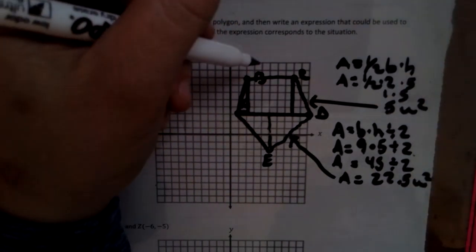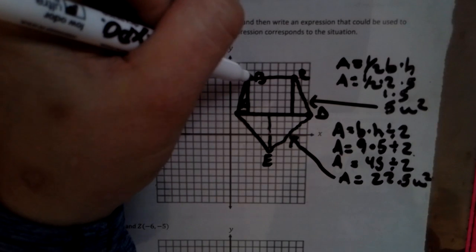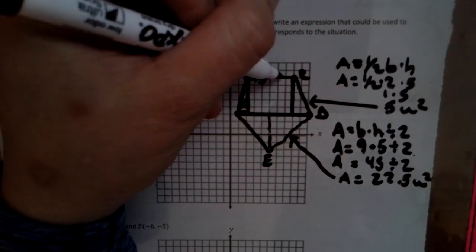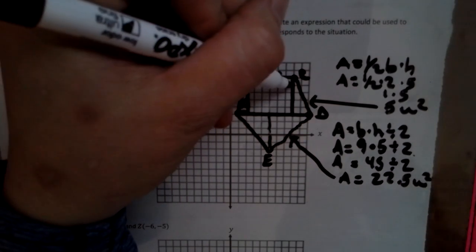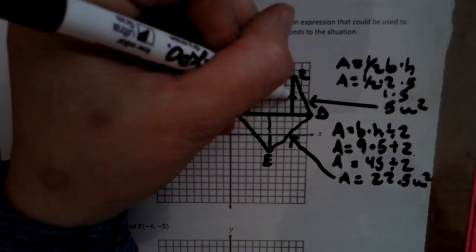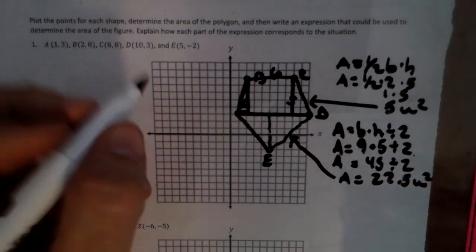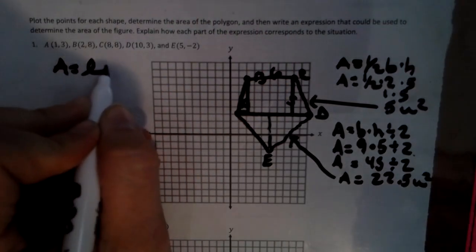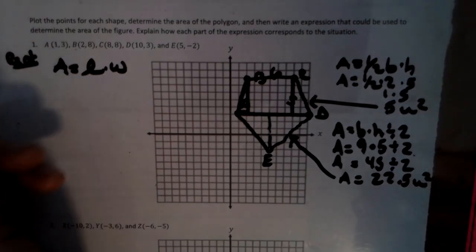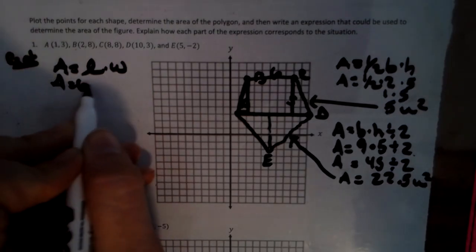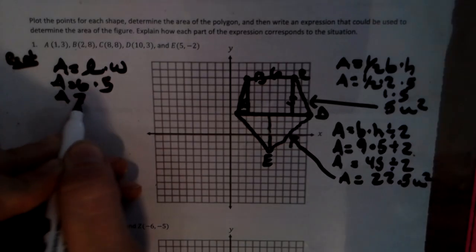A rectangle is kind of easy to figure out. We have one, two, three, four, five, six by one, two, three, four, five, six by five. So we have area equals length times width because it's the rectangle. So area equals six times five. Area equals 30 units squared. And that's for the rectangle.